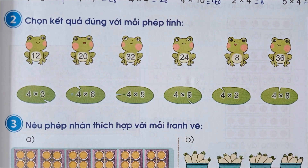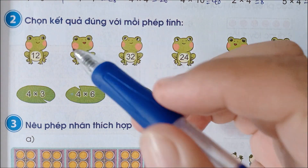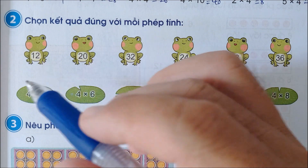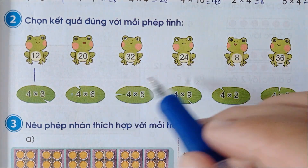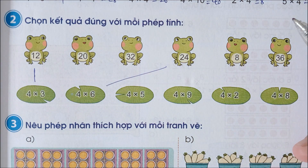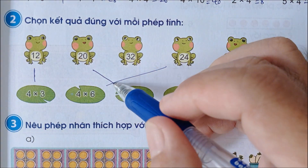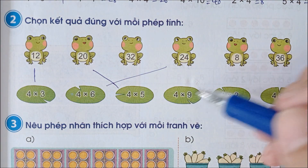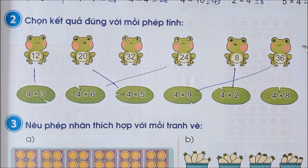Bài số 2: Chọn kết quả đúng với mỗi phép tính. 4 x 3 bằng 12, 4 x 6 bằng 24, 4 x 5 bằng 20, 4 x 9 bằng 36, 4 x 2 bằng 8, 4 x 8 bằng 32.